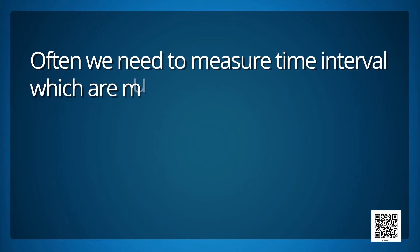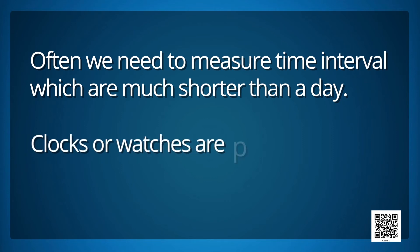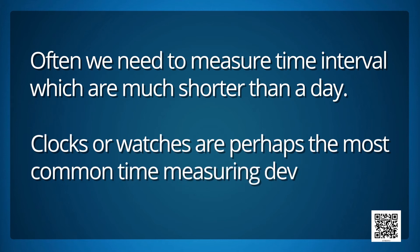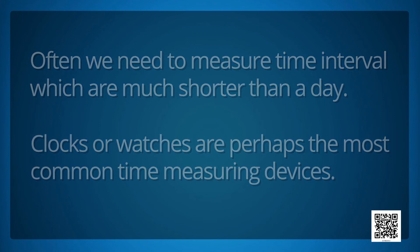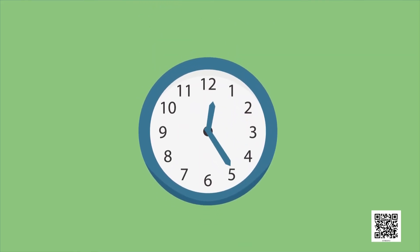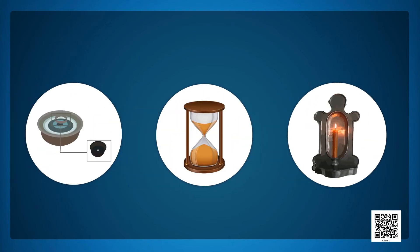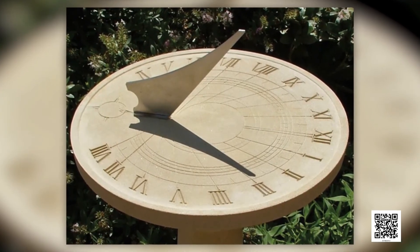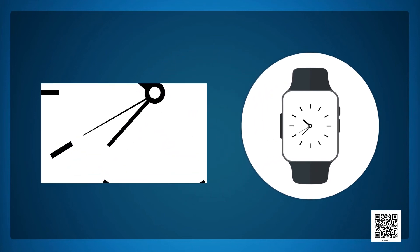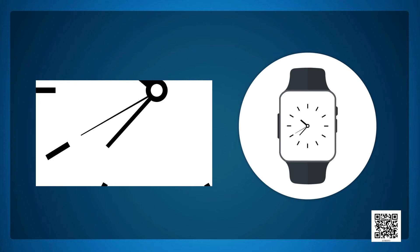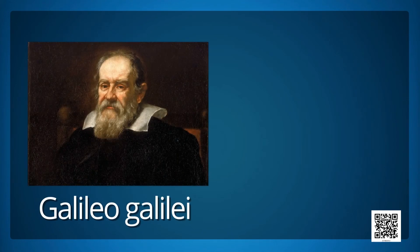Often we need to measure time intervals which are much shorter than a day. Clocks or watches are perhaps the most common time measuring devices. In order to measure time intervals shorter than one day, a number of time measuring devices were invented in ancient times like water clock, sand clock, candle clock, or sundial. We can measure seconds easily in our presently available watches.